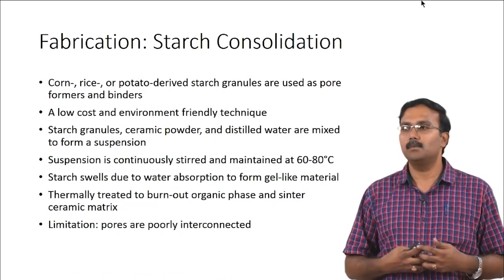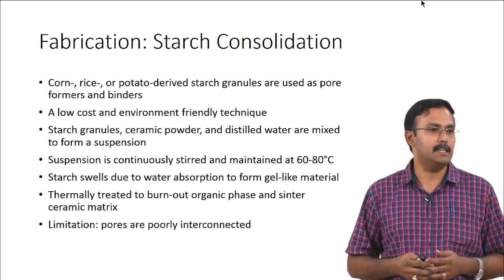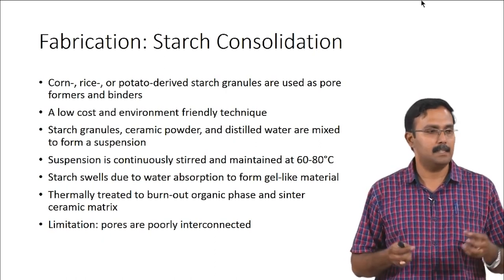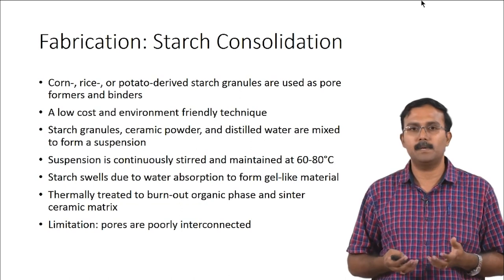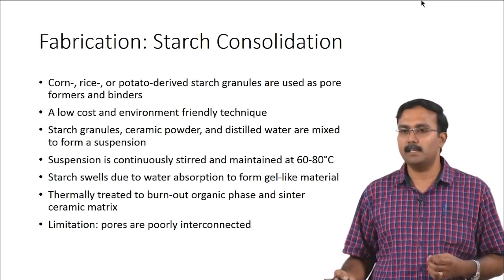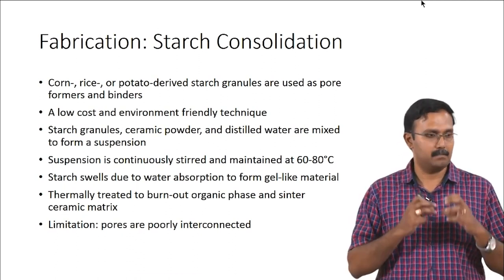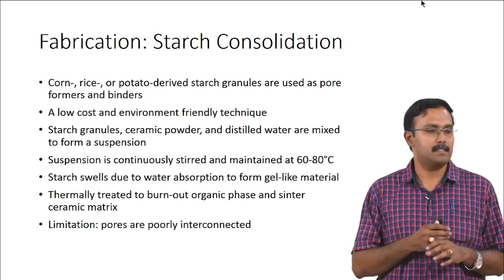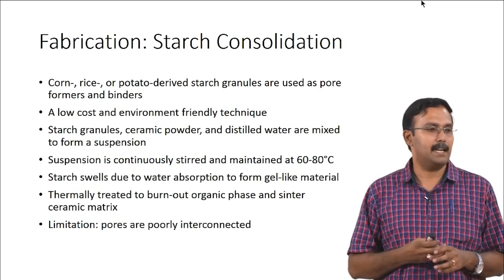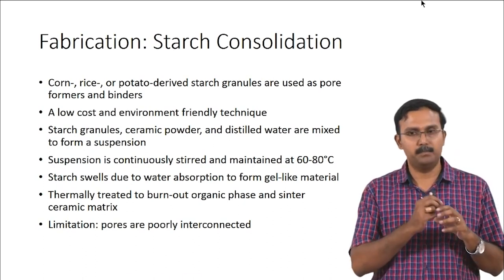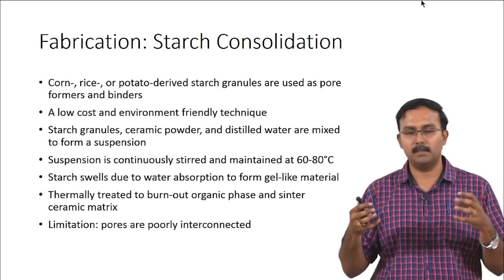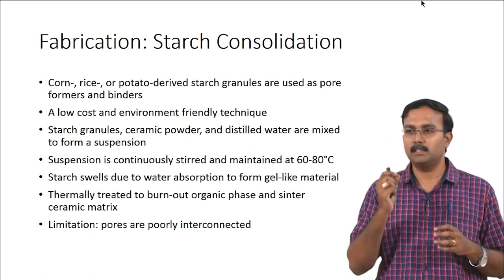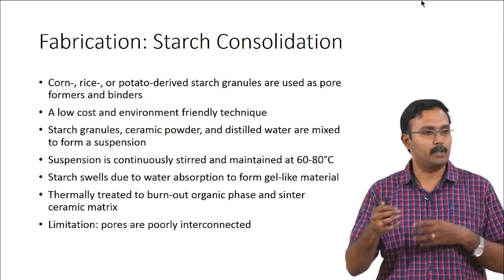Another technique is the starch consolidation technique, which is eco-friendly. Corn, rice, or potato derived starch granules are used as pore formers and binders. Starch granules, ceramic powder, and water are mixed into a suspension, continuously stirred and maintained at 60–80°C, then cast. The starch swells by absorbing water and forms a gel-like material. It is then thermally treated — heated to burn out the organic phase and sinter the ceramic. The starch granules occupying cavities create pores after sintering; however, pores are not interconnected because only the starch granules occupy them with no mechanism to create interconnected pores.